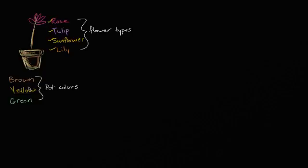Let's think through it. You could have a brown pot, a yellow pot, or a green pot — you definitely have to pick one. And then for each of those three pots, there are four possible flowers: rose with brown, rose with yellow, rose with green; tulip with each of the three pots; sunflower with each of the three pots; and lily with brown, lily with yellow, and lily with green. So how many scenarios are we talking about? We had three pots and four possible flowers for each — so three times four equals twelve.